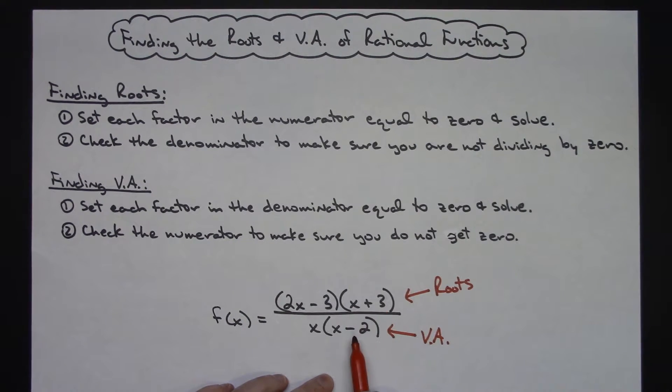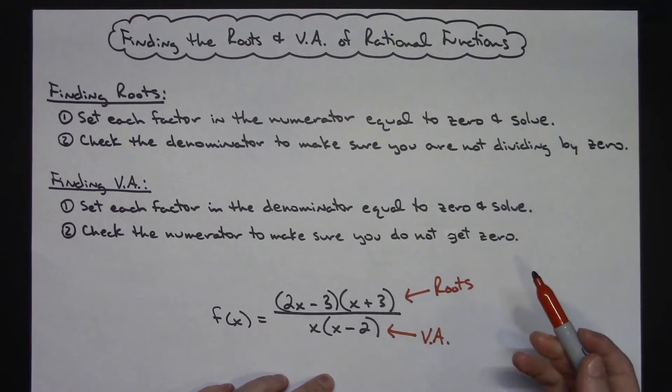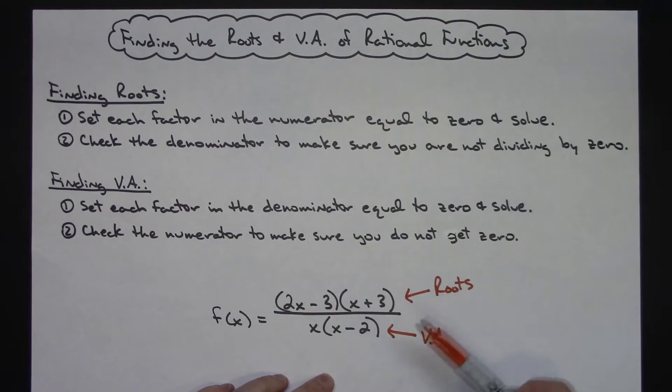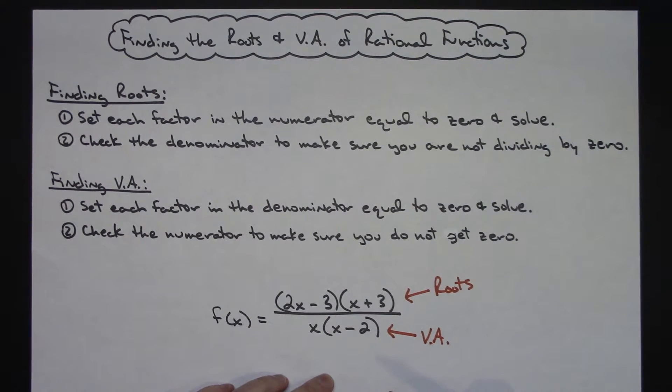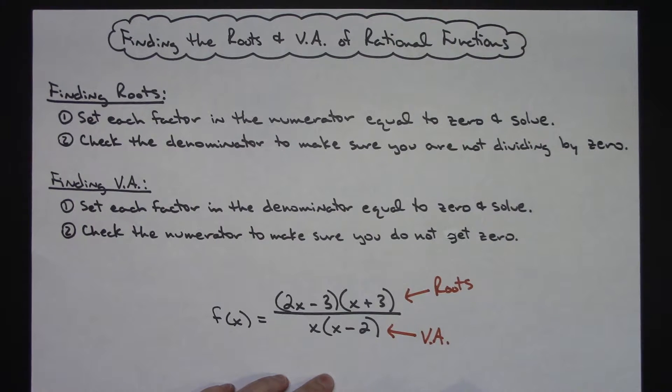If you take one of these factors, set it equal to zero, solve, and you take that number and plug it into your denominator and you get a zero, you would be dividing by zero, so that means it would not be a root.